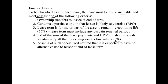Criterion five is that the asset is of such a specialized nature that it is expected to have no alternative use to the lessor at the end of the lease term. In most problems you'll encounter in homework and on tests, criteria three, four, and five are the main ones that will be provided.